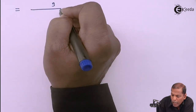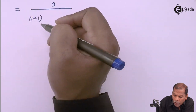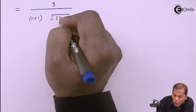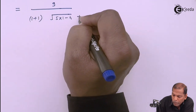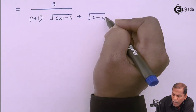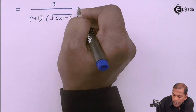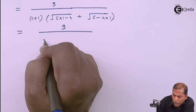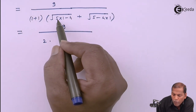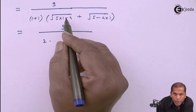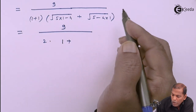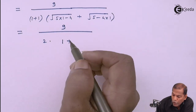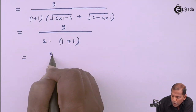Now we substitute the limit as x equals 1. So in the numerator we have 9, upon (1 plus 1) in the first bracket, then square root of (5 times 1 minus 4) plus square root of (5 minus 4 times 1) in the second bracket. On simplifying further, we have 9 upon: 1 plus 1 gives 2, then inside the root we have 5 minus 4 which gives 1, and square root of 1 is 1. Then plus again 5 minus 4 gives 1, and square root of 1 is 1.